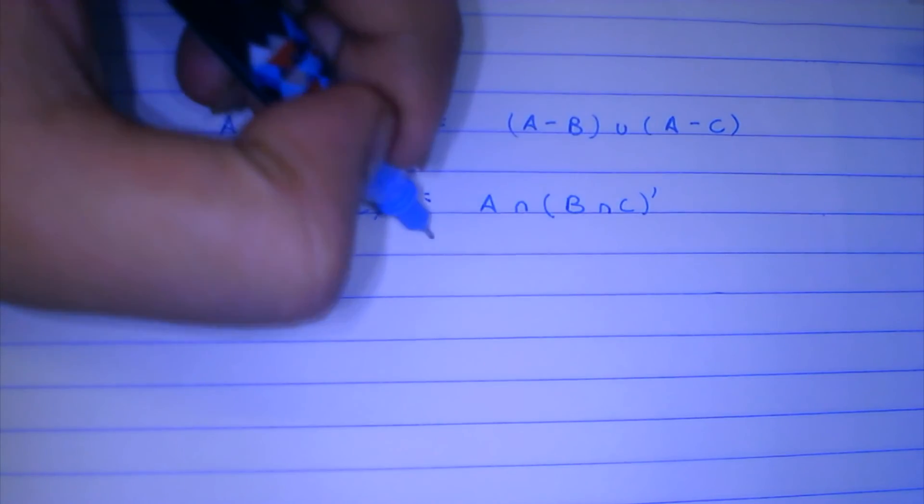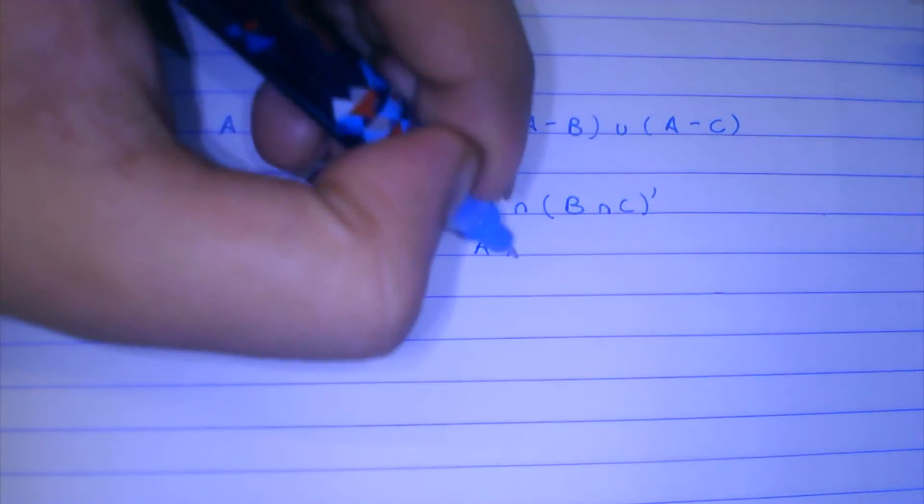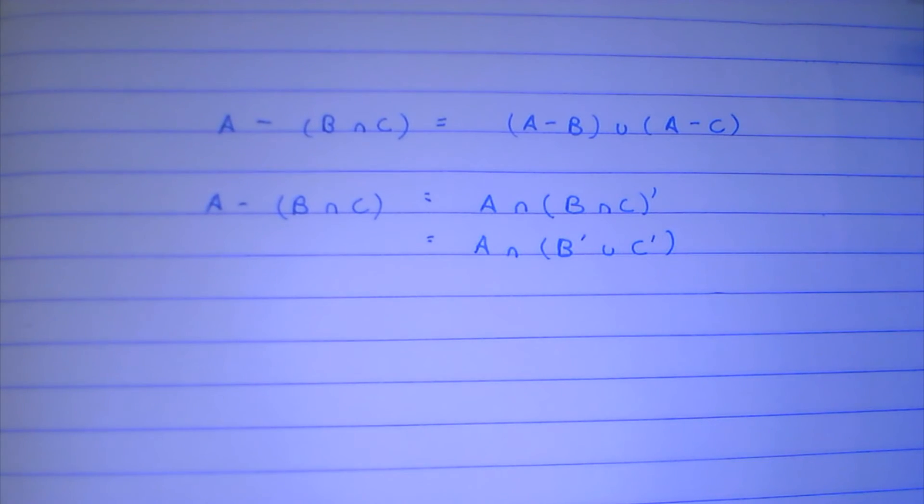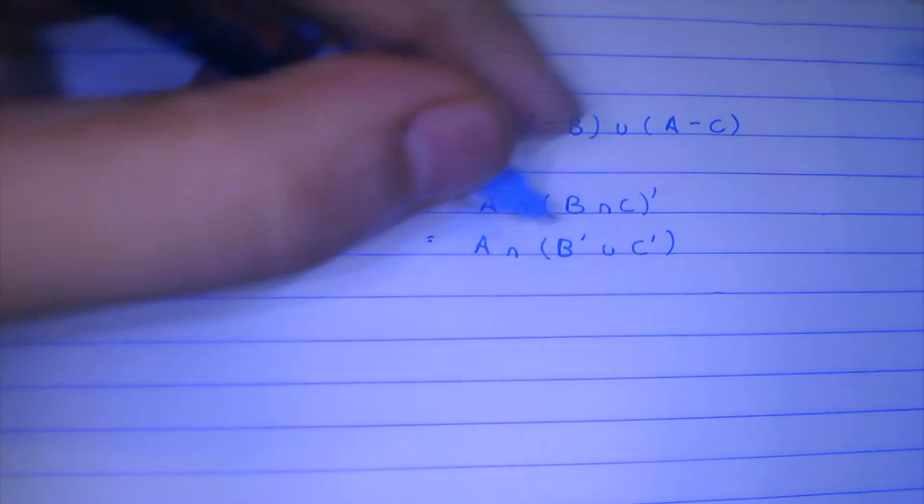So A minus (B intersection C) is actually equal to A intersection (B intersection C) complement. I told you that these identities are going to be very important. So A intersection (B complement union C complement), and that if you remember is our old DeMorgan's law.